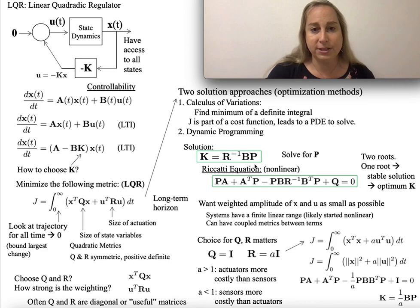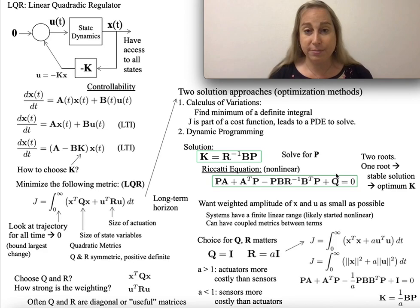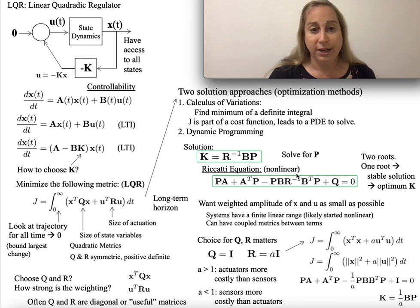Well, P turns out to be the solution of a form of a Riccati equation. Now, this is an interesting form of equation that shows up in a couple places in physics, and it shows up here as well. And this is a matrix equation. So the order of things matter. And this is why you also see transpose and so forth.